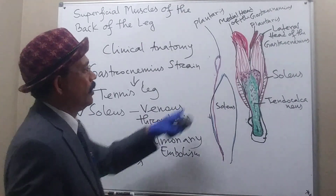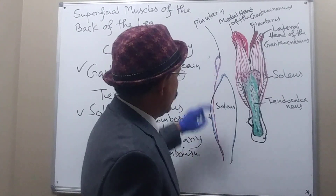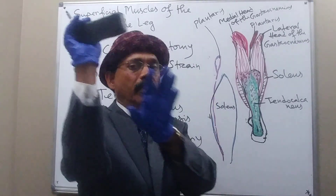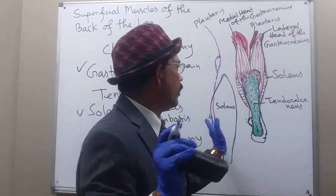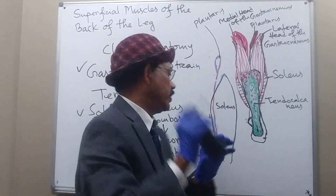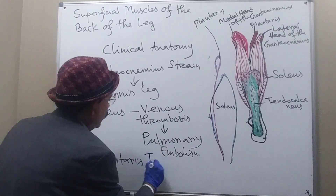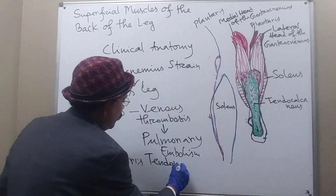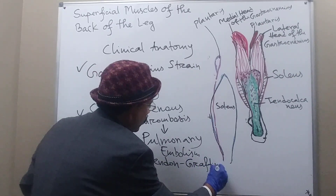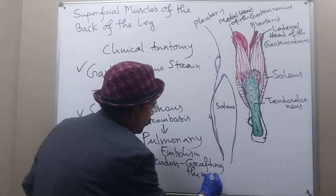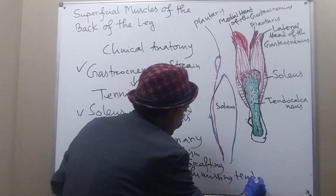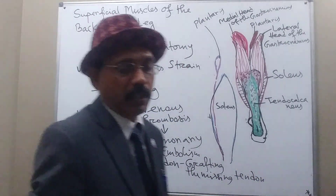Another clinical point: the plantaris tendon may be harvested and used for tendon grafting if there is damage to a tendon elsewhere in the body, such as in the hand. We can easily take the plantaris tendon from the patient and graft it to replace the missing tendon anywhere in the body.